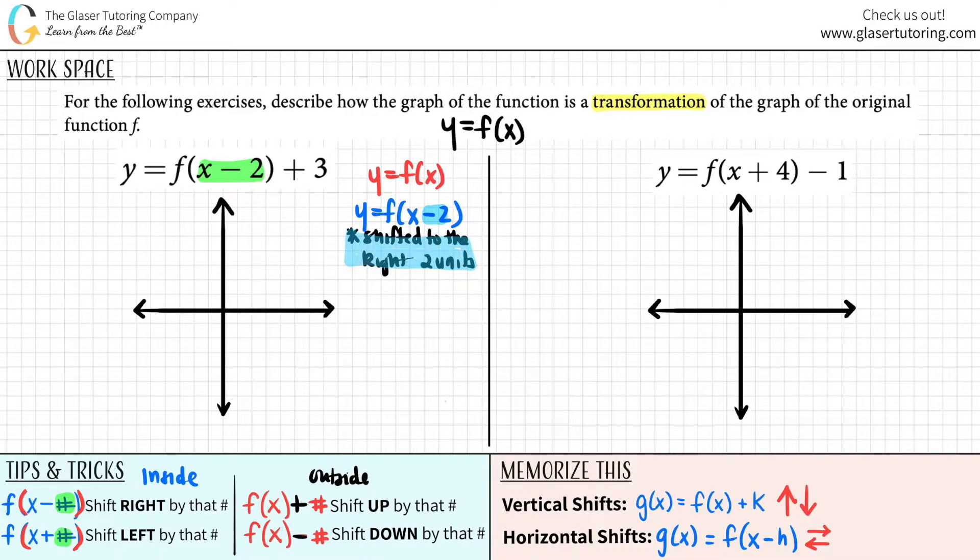But now we have to address the other thing. The other thing is a plus 3 on the outside. So y equals f of x minus 2 plus 3. What does this mean now? This is outside of the function and that's your vertical shifts. Plus means shift up. So you also shifted up three units as well. So there are two shifts here.